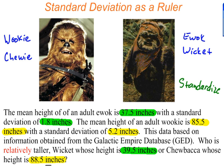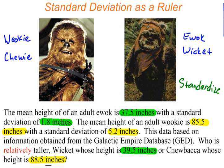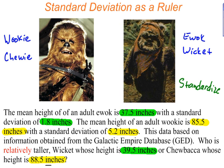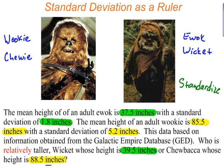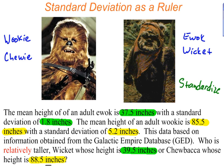This data is based on information obtained from the Galactic Empire database. Who is relatively taller: Wicket, our Ewok over here, whose height is 39 inches, or good old Chewy, whose height is 88.5 inches?